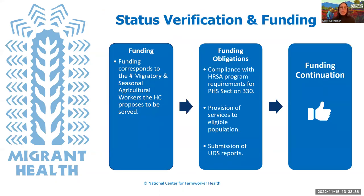When health centers apply for funding, they mention in their grant applications the number of migratory and seasonal agricultural workers they're planning to serve. If they receive the funding, they acquire obligations including compliance with program requirements, providing services to target populations, and submitting UDS reports. If the health center can establish an identification and verification process, show that funds were used for the intended services, and submit their reports on time, the likelihood of continuing to receive funding is very good. It's important to follow all of these obligations for funding continuation.